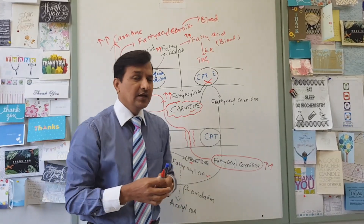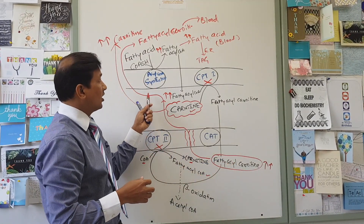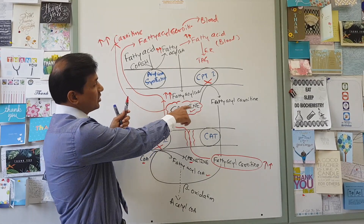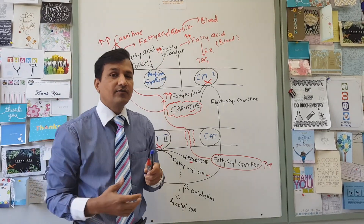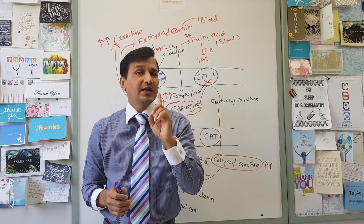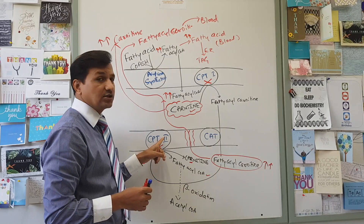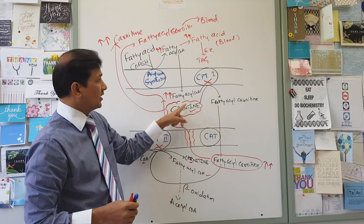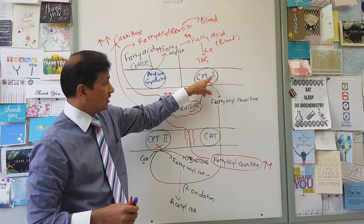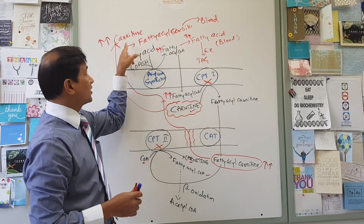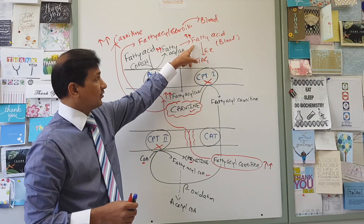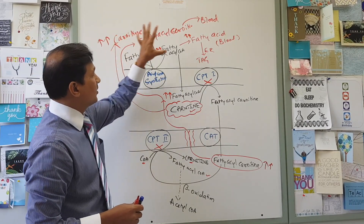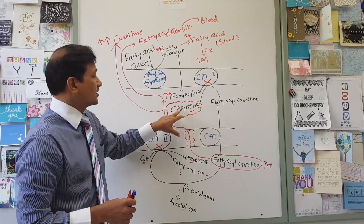In CPT2 deficiency: fatty acyl-carnitines are elevated, long chain fatty acyl-carnitines are elevated in the blood, carnitine levels are decreased because they are already consumed, and there is elevation of long chain dicarboxylic acids. So: elevation of fatty acyl-carnitine points to CPT2 deficiency; elevation of only fatty acid with elevated carnitine points to CPT1 deficiency; elevation of fatty acids with low carnitine points to carnitine deficiency.